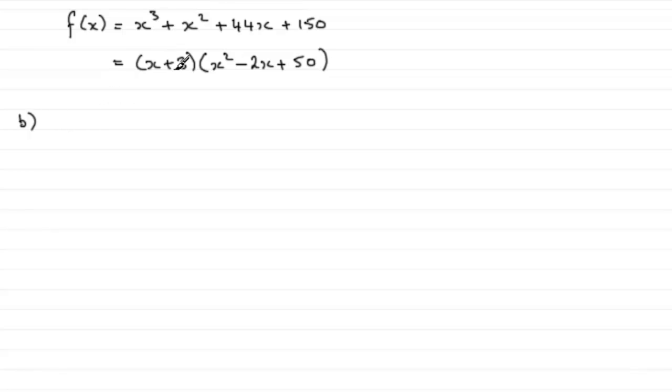I factorised f of x. Remember in the previous part we found out the coefficient of x to be minus 2, and we found this value to be 50. So f of x is this when factorised.